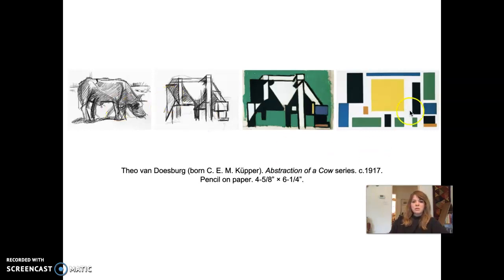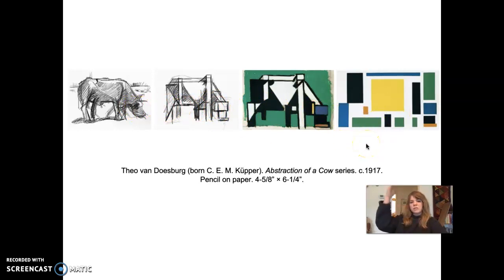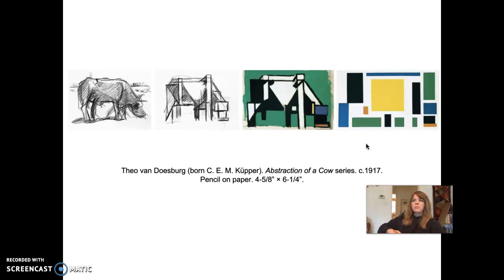It's a great series to really visualize what abstraction means — taking something from reality through different levels of abstraction. Abstraction exists on a scale: some work might be slightly abstracted all the way to very far out, such as this piece on the far right. The artist wanted to see how far he could abstract the cow and still have the final image capture its essence.